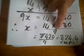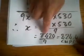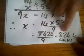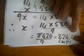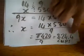Now you can work it out. If we multiply that with a calculator, it'd be 7420. Divide by 9 will give us 824.4. What is this? This will be cups of sugar.